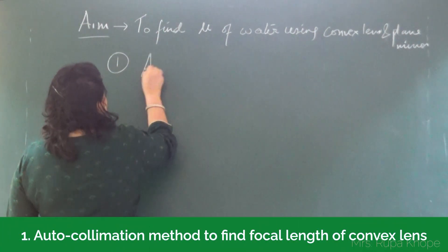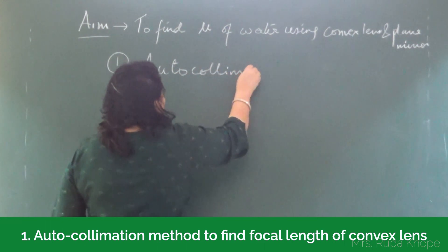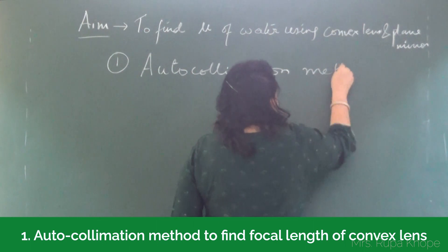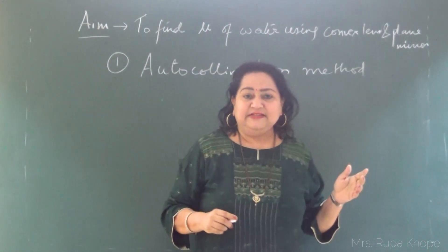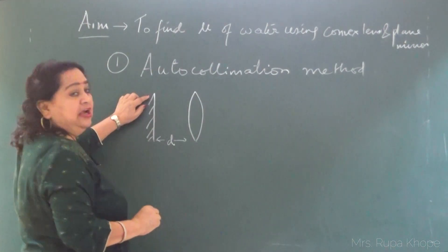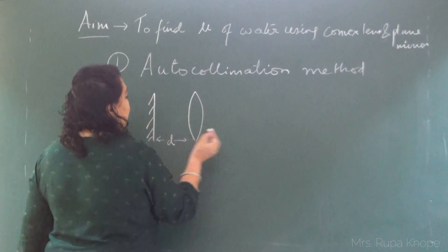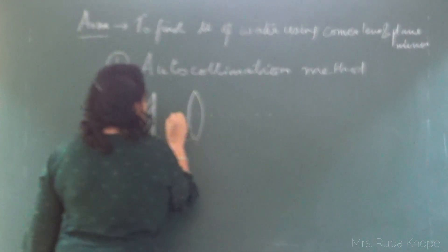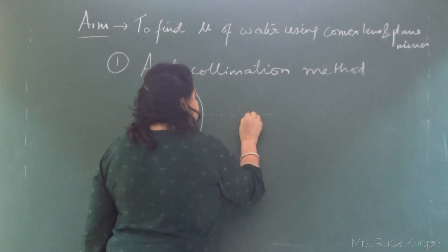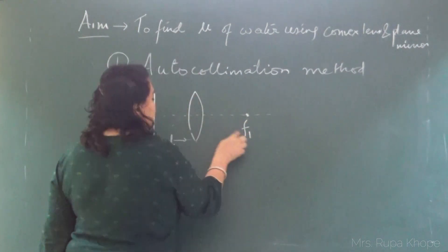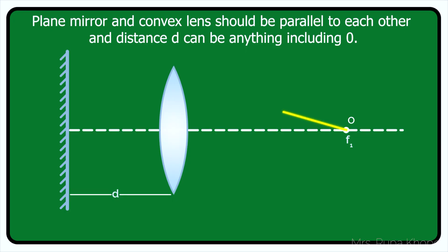The first concept is called the auto-collimation method. This is the main concept. For example, we have a convex lens and a plane mirror. At a distance d from the plane mirror, I keep the convex lens. This is the principal axis of the convex lens. On this principal axis, there is a focal point or focus. If I keep the object at the focal point, I draw a ray of light — the ray comes out parallel.